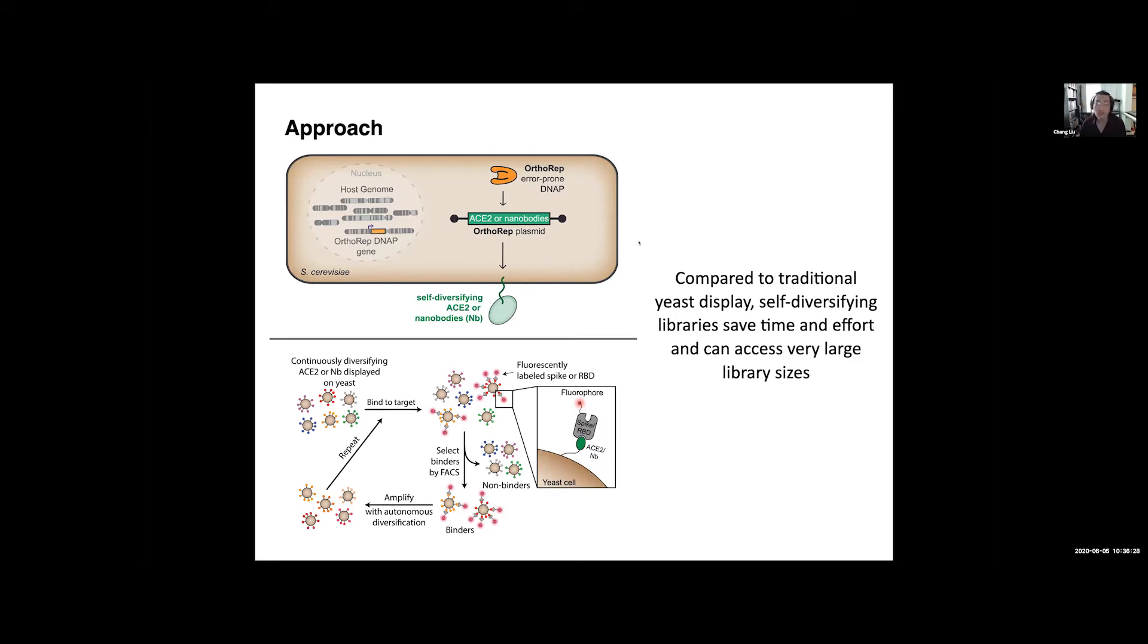And the reason this could be a very important type of approach is because, the traditional way of doing binding evolution through what many of you might realize here is called yeast display, is that you do the same thing, except you don't have these libraries that are self-diversifying. You have sort of these dead-end libraries. And so anytime you get something with a weak binding affinity, you have to remake a library based on that and go through cycles of this multiple times to improve it. And those rediversification techniques are very time-consuming. You have to do that in vitro, and you can only get very small library sizes.